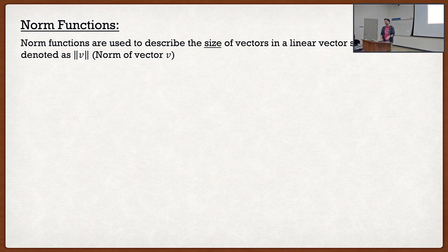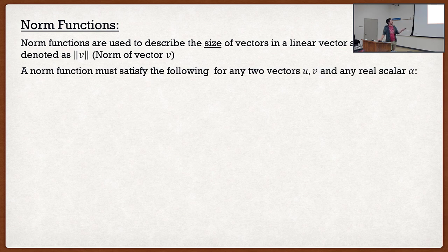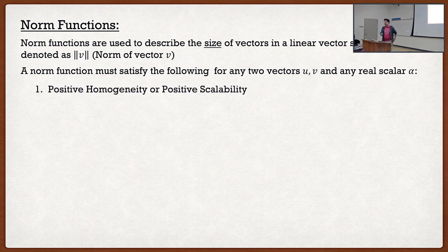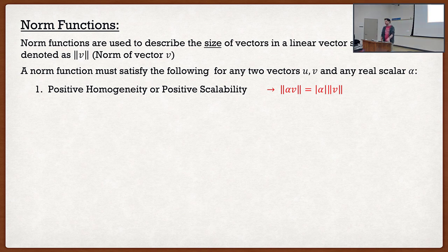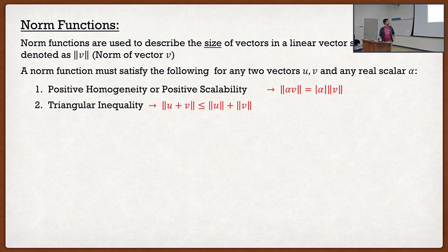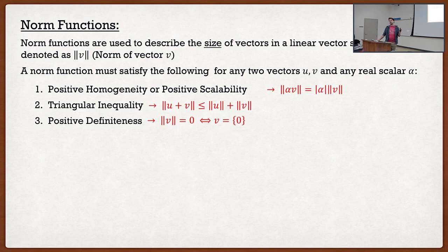The idea of a norm function is exactly the same as magnitude — it describes the size of a vector in a linear vector space. We denote it with double absolute value signs: the norm of vector v. A norm function must satisfy, for any two vectors u and v and any real scalar alpha, a couple of properties: positive homogeneity, the triangular inequality, and positive definiteness — which says the only way the norm of a vector is zero is if it is the zero vector.